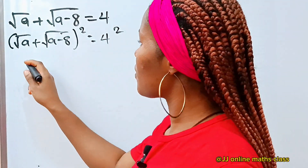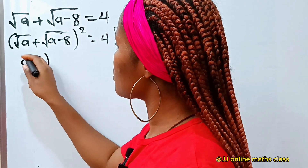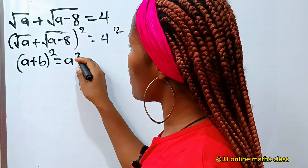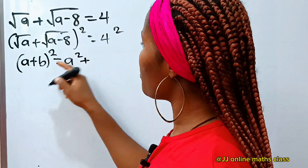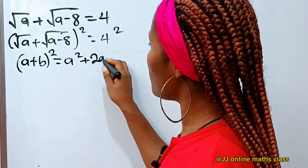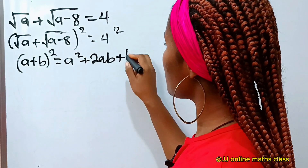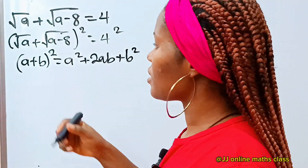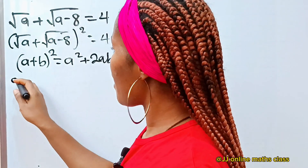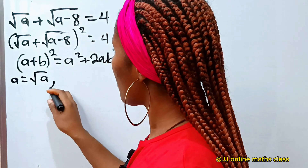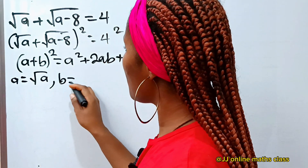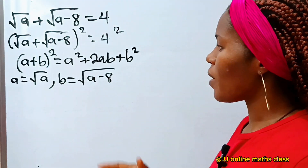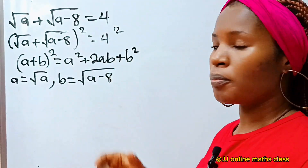Now when you have a plus b, all squared, this is equal to a squared plus 2ab plus b squared. So in our case, our a is equal to root a, while our b is square root of a minus 8. So we are going to expand this in that form.